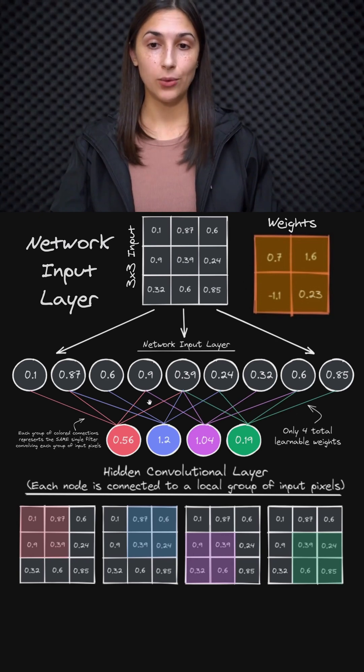So even though we have 16 total connections being illustrated here, that's actually just four connections, four learnable parameters rather, being repeated four times. So we actually only have four learnable parameters with this example here, which are the four values in our convolutional filter.